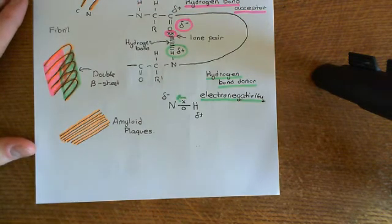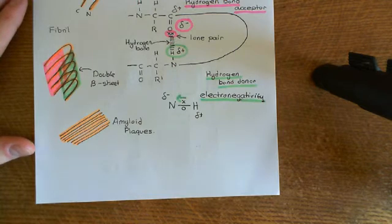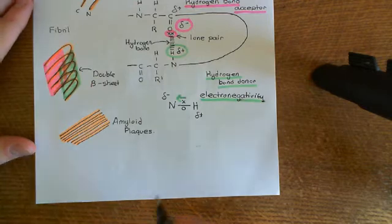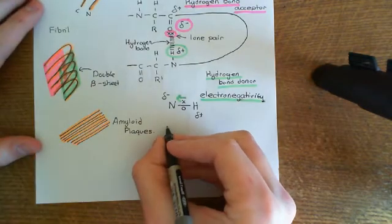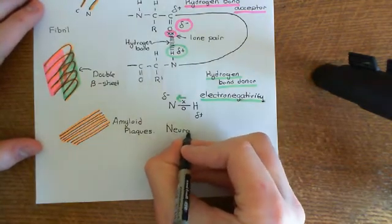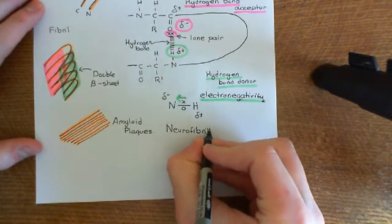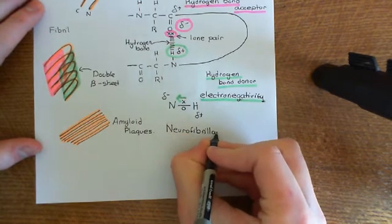What we're now going to look at is how the amyloid plaques seem to trigger the formation of the neurofibrillary tangles. It is thought that the formation of the neurofibrillary tangles is secondary to the formation of the amyloid plaques. So let's now talk about neurofibrillary tangles, or NFTs for short.